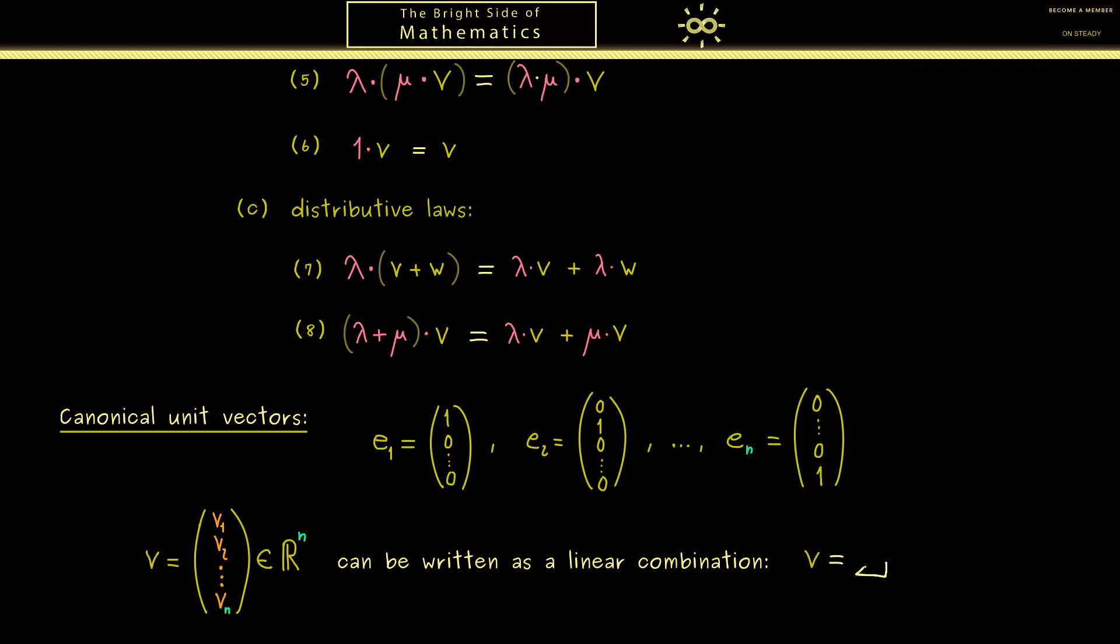And then we can use these components as scalars in the linear combination. So we have the sum vj times ej. And here, please don't forget vj is a scalar and ej is a vector in R^n. Hence this is a linear combination with the resulting vector v.